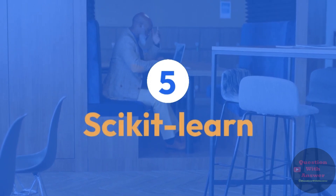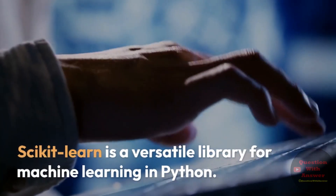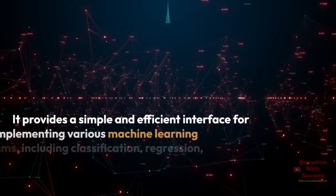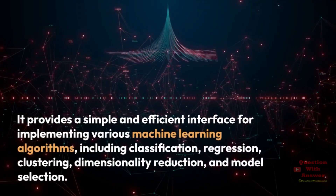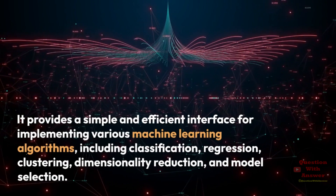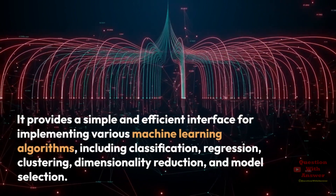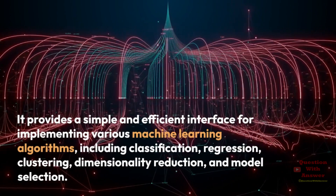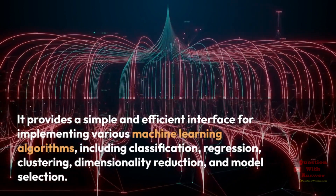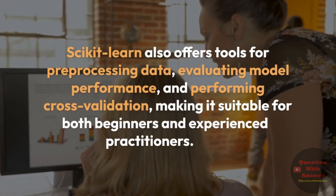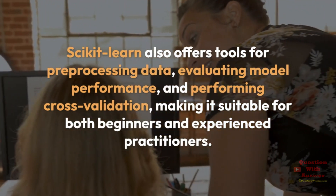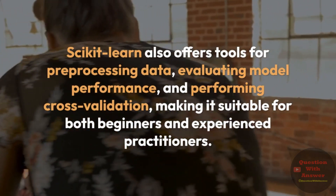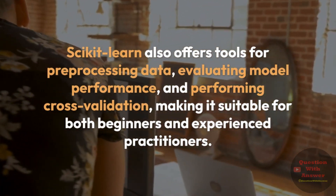Scikit-Learn is a versatile library for machine learning in Python. It provides a simple and efficient interface for implementing various machine learning algorithms, including classification, regression, clustering, dimensionality reduction, and model selection. Scikit-Learn also offers tools for pre-processing data, evaluating model performance, and performing cross-validation, making it suitable for both beginners and experienced practitioners.